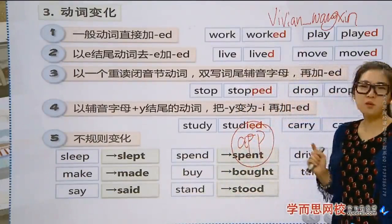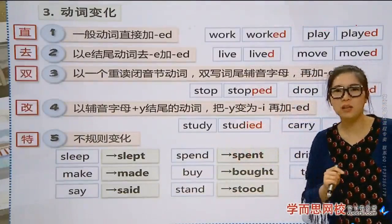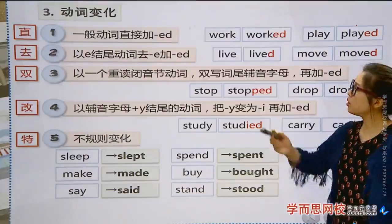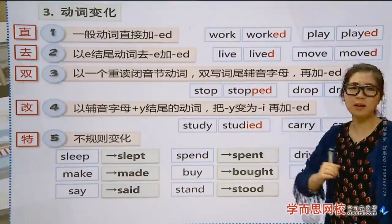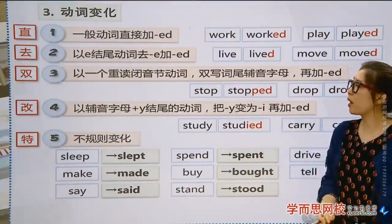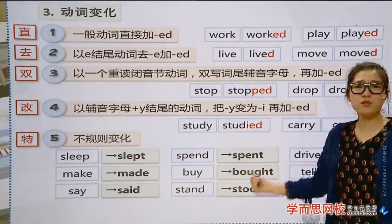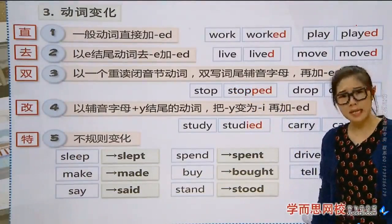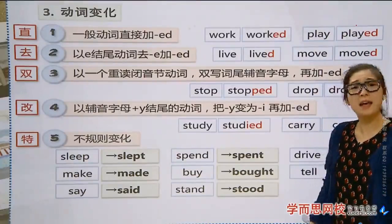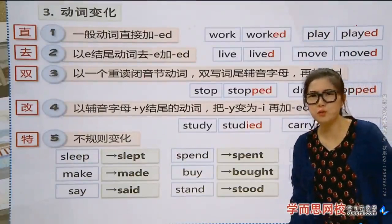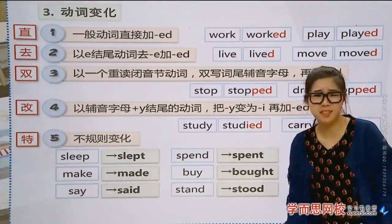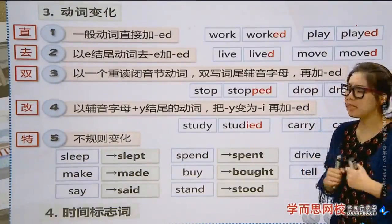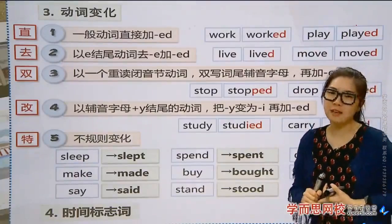Now, after covering all of this, we do have the responsibility and obligation to memorize these well. According to the mnemonic '直去双改特' (zhí qù shuāng gǎi tè): 直 = directly add '-ed'; 去 = drop 'e' add '-ed'; 双 = double consonant add '-ed'; 改 = change 'y' to 'i' add '-ed'; 特 = special/irregular — must memorize.